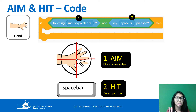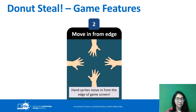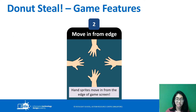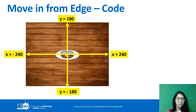The second feature is that all hand sprites will move in from the edge of the game screen. Our Scratch screen has a top maximum y value of 180, a bottom maximum y of minus 180, a maximum right x of 240, and a minimum left x of minus 240. If you put your sprites at these positions, they will be at the edge of the game.